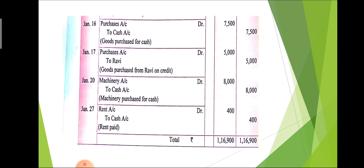We then total both sides and find that the debit side and credit side are both equal to rupees 1,16,900. That is the double entry system, meaning a single transaction affects two accounts — if one account is debited by an amount, another account is credited by the same amount.